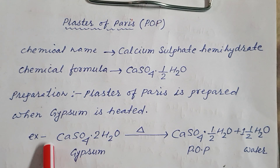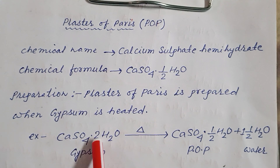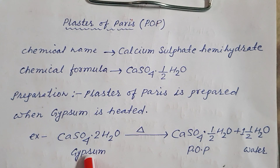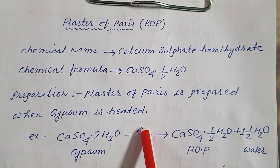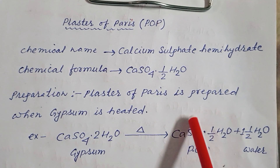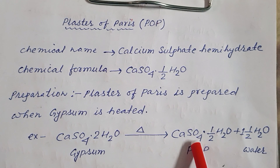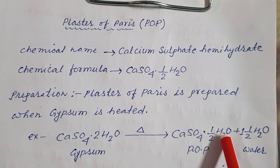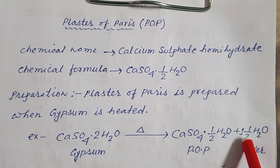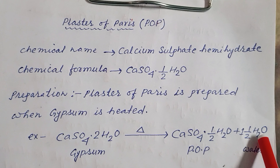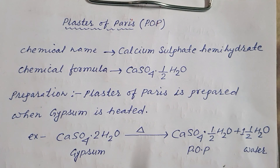See the equation. Calcium sulfate dot 2 H2O is gypsum. When this gypsum is heated, we will get POP, plaster of Paris — CaSO4 dot half H2O — and one and a half molecules of water will be removed.